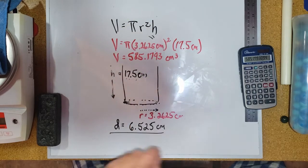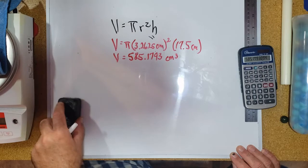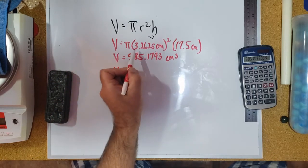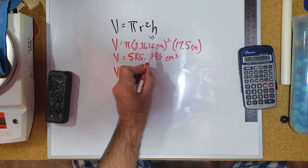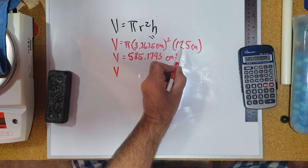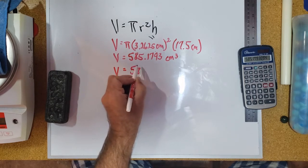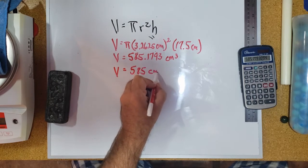Now the other aspect to this is sig digs. This number has one, two, three, four, five sig digs in it. This has one, two, three. So my answer should be to three sig digs, so it'd be 585 centimeters cubed.